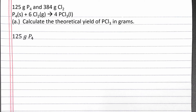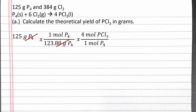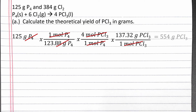We'll use dimensional analysis to convert 125 grams P4 into grams PCl3. We can use the molar mass of P4 to convert from grams of P4 to moles P4. Then we use the coefficients in the balanced chemical equation to convert from moles of P4 to moles of PCl3. Then we use the molar mass of PCl3 to convert from moles to grams. Completing the calculation, we should get 554 grams PCl3.